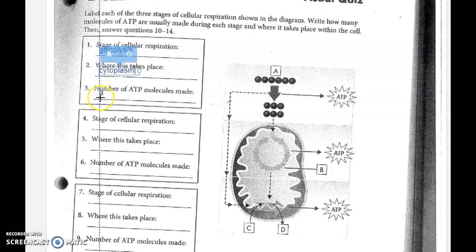Then we make some, use some, and come out with a grand total of about two ATP from glycolysis.